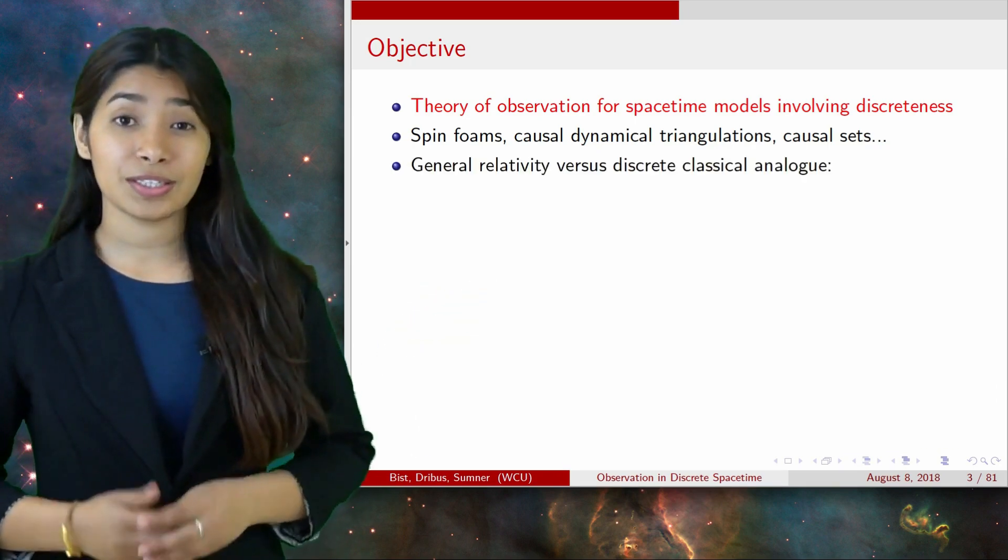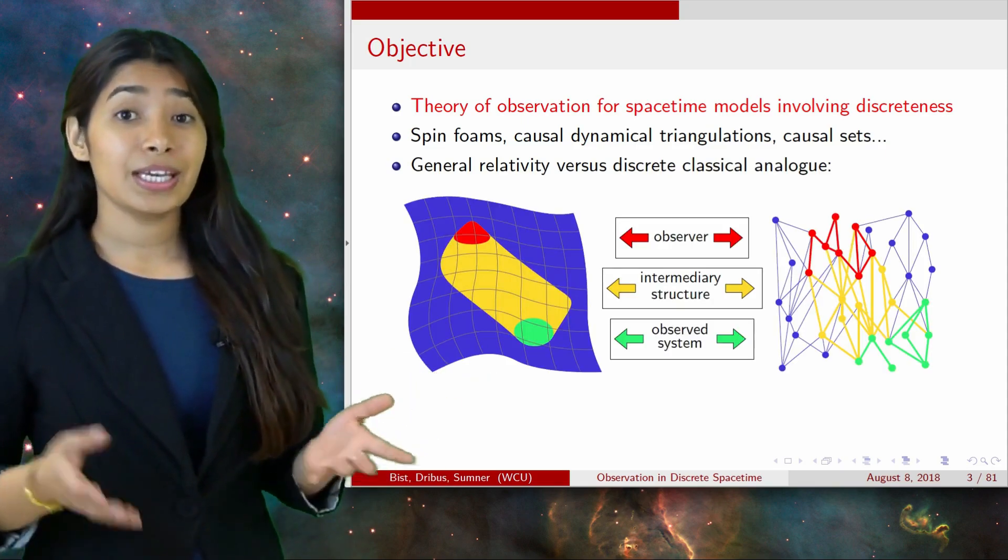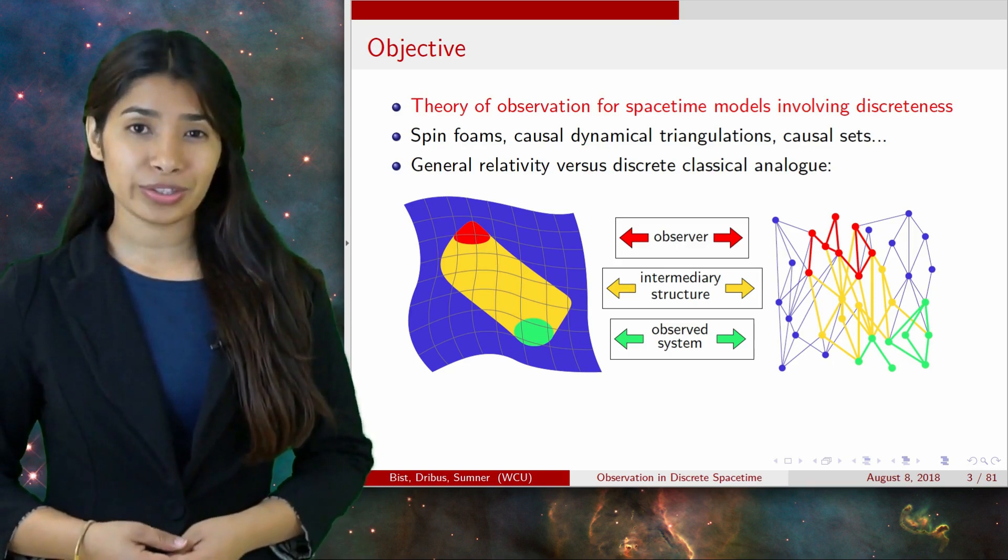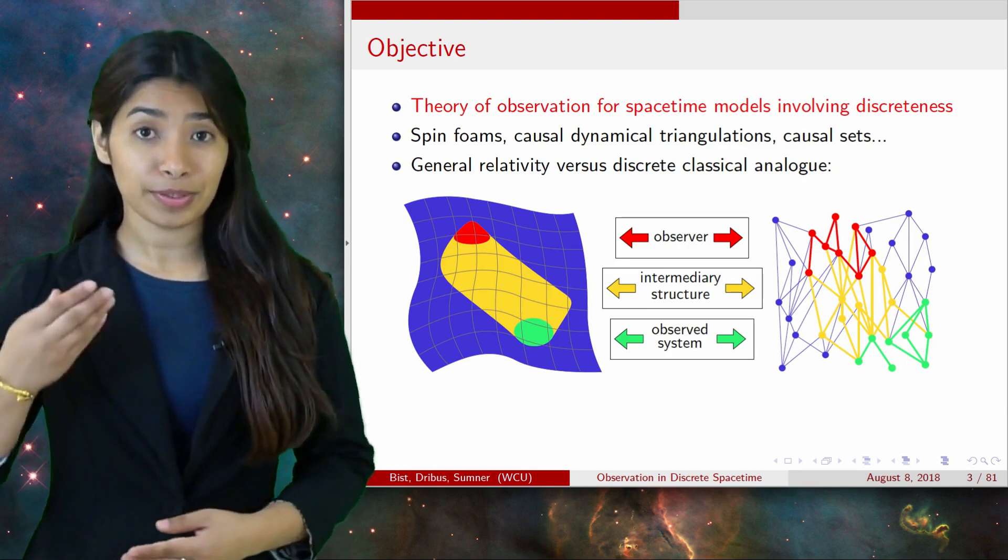Here's an informal comparison between the situation in general relativity and the one using the discrete model. As usual, we are suppressing the spatial dimension in the picture and taking the direction of time or the causal influence to flow up the page.